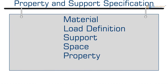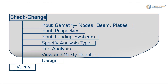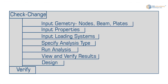Hello everyone, welcome to STAAD Pro tutorials. Today we will learn how to assign specification property and support specification. I have considered a basic geometry for understanding purposes. The workflow we will follow is: first create geometry nodes, beams, or plates; then provide properties; then go for specification constants or support for analyzing a particular structure; then provide the loading.